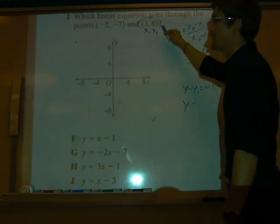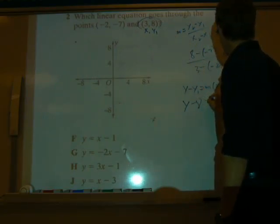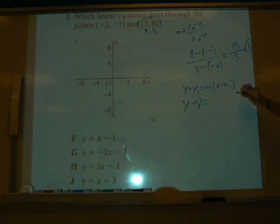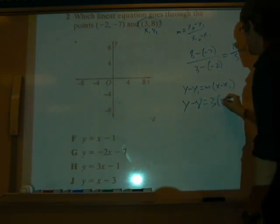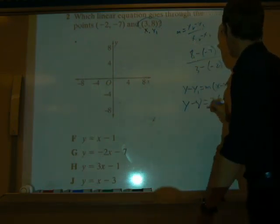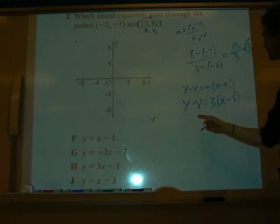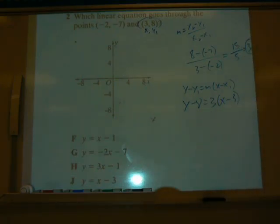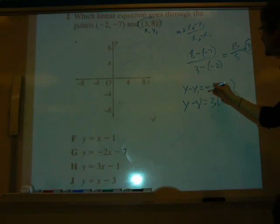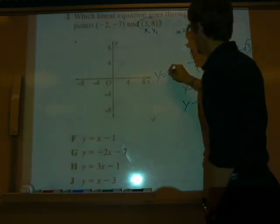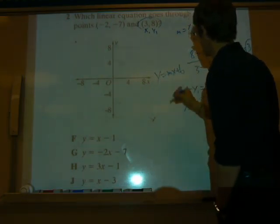So let's plug in. We're going to do y minus 8 equals our m, which is 3, and then we're going to do x minus our x1, which will also be 3. So now we've plugged in for our point slope form. Now our next step is going to be to distribute this 3 and eventually get it in y equals mx plus b form.